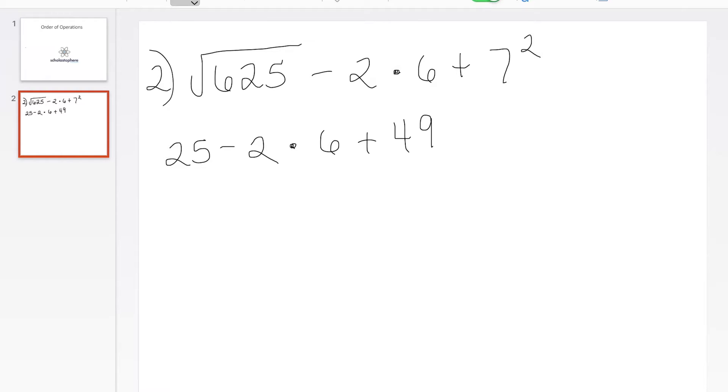So in this case, we're going to take care of the multiplication because that one comes first. So a negative 2 times positive 6 gives us a negative 12. We're going to bring down the positive 49 and a positive 25.